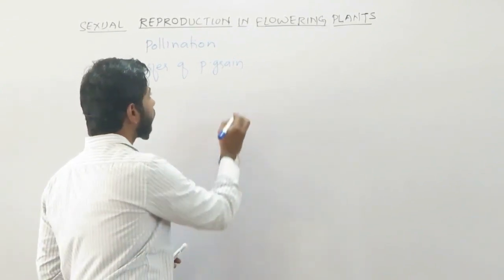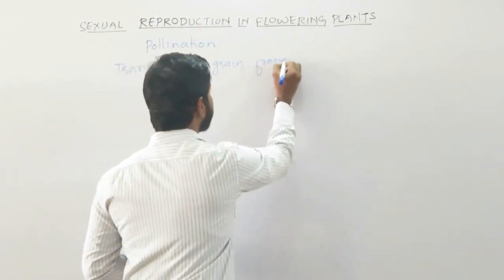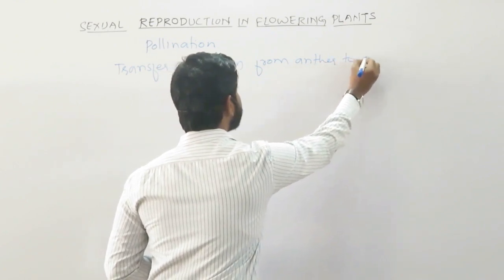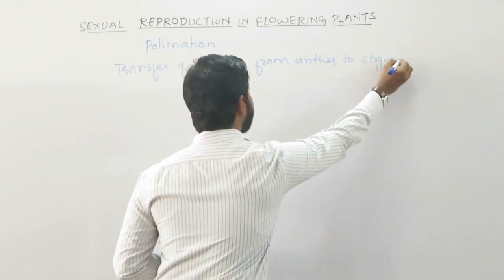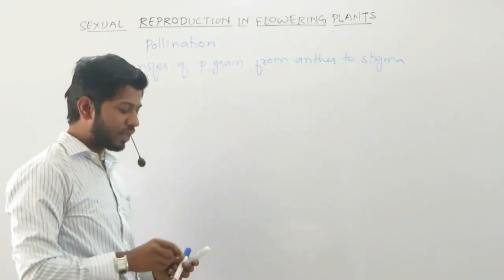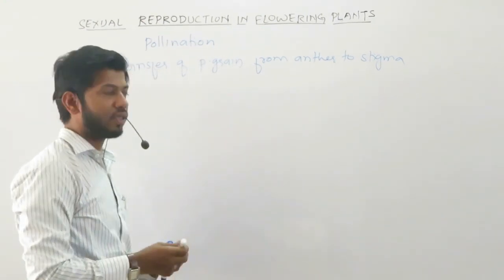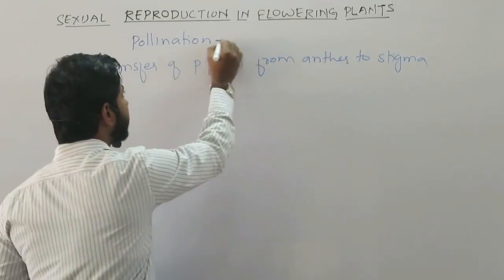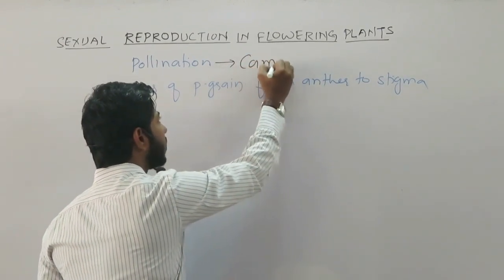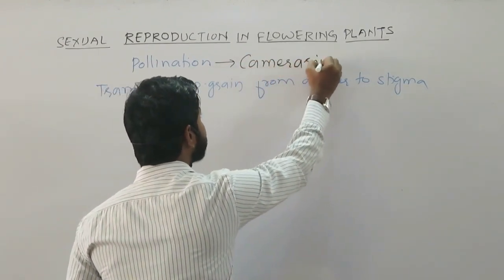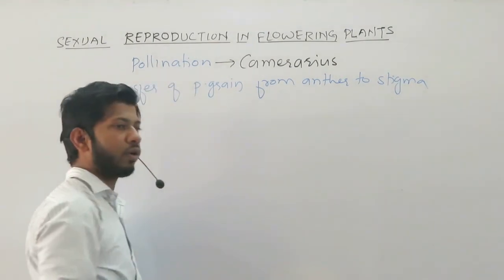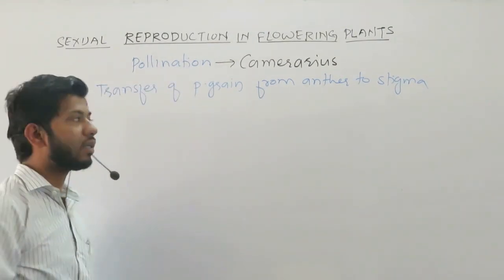Stigma is a receptive part of the carpel. So this transfer of pollen grain from anther to stigma is referred to as pollination. The process of pollination was first discovered by the scientist Camera Reus in 1964.